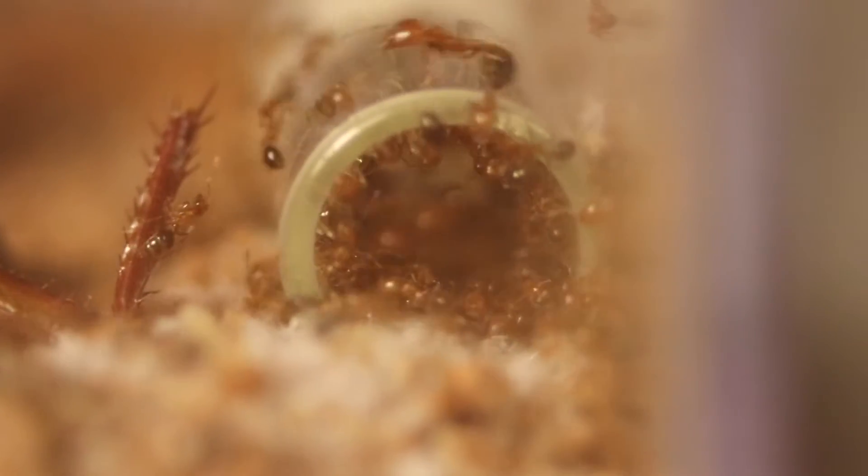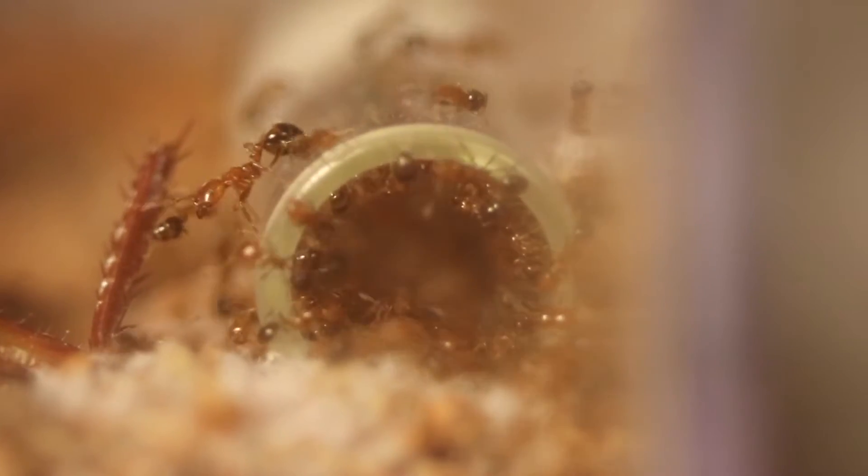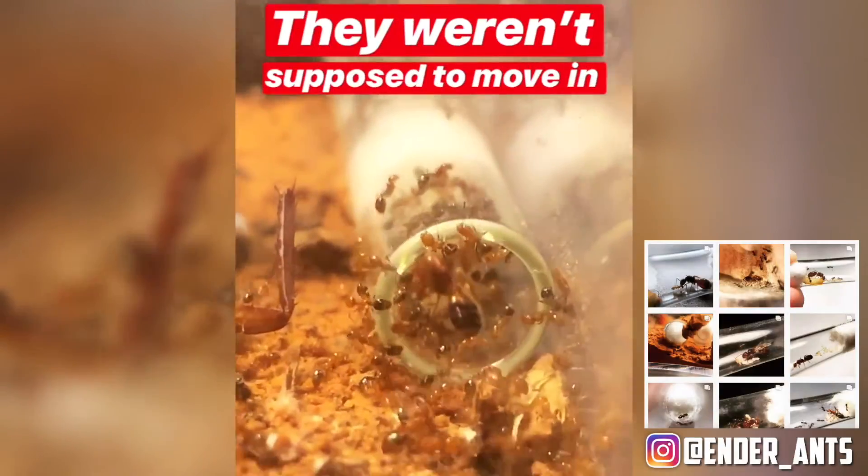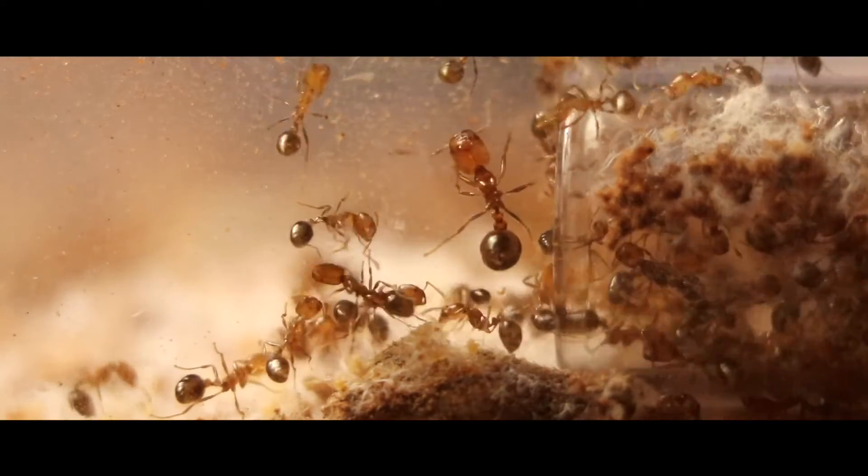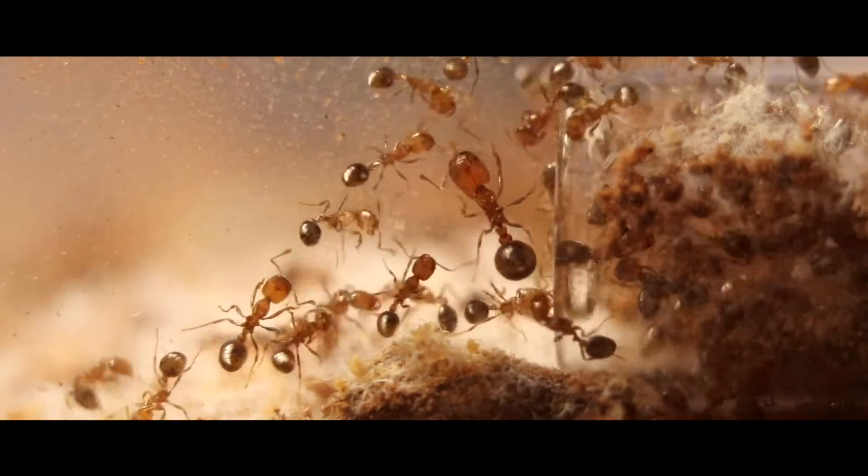One time when I was on vacation, they moved into a smaller test tube meant for a water reservoir. I think I recorded that on my Instagram account, so go follow it if you haven't already. They were pretty packed in there, like there were ants just flowing out every now and then. Just something to show how needy they are with water in their nest.